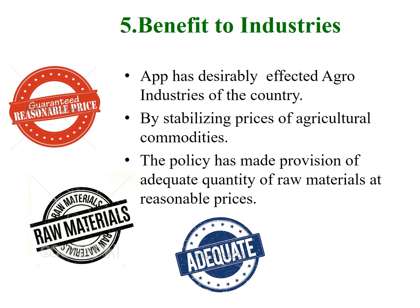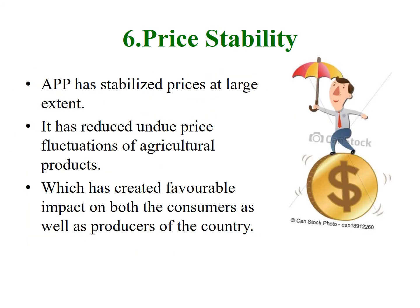Another effect is that it benefits industrialists. The agricultural price policy has benefited agro-industries of the country like sugar, cotton, textile, vegetable oil, etc. By stabilizing the prices of agricultural commodities, the policy has made provision for adequate quantities of raw materials for agro-based industries at reasonable prices. Regarding price stability, the agricultural price policy has stabilized the prices of agricultural products to a large extent. It has been successful in containing undue fluctuations in prices, which has created a favorable impact on both consumers and producers.